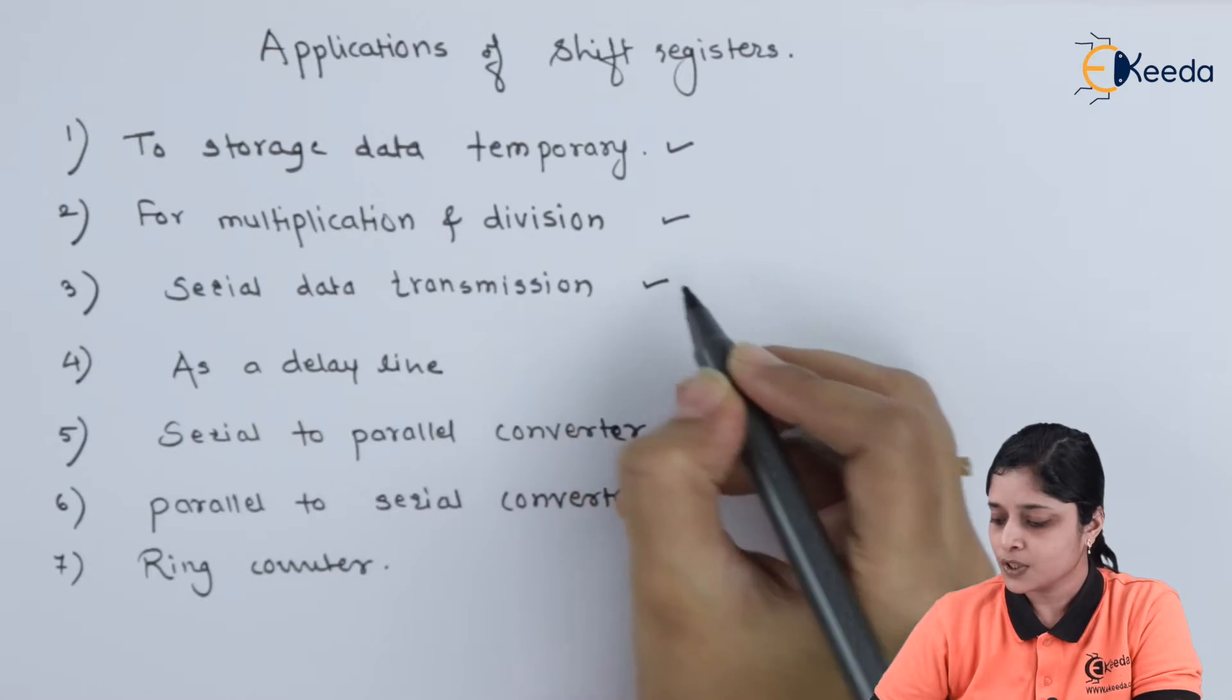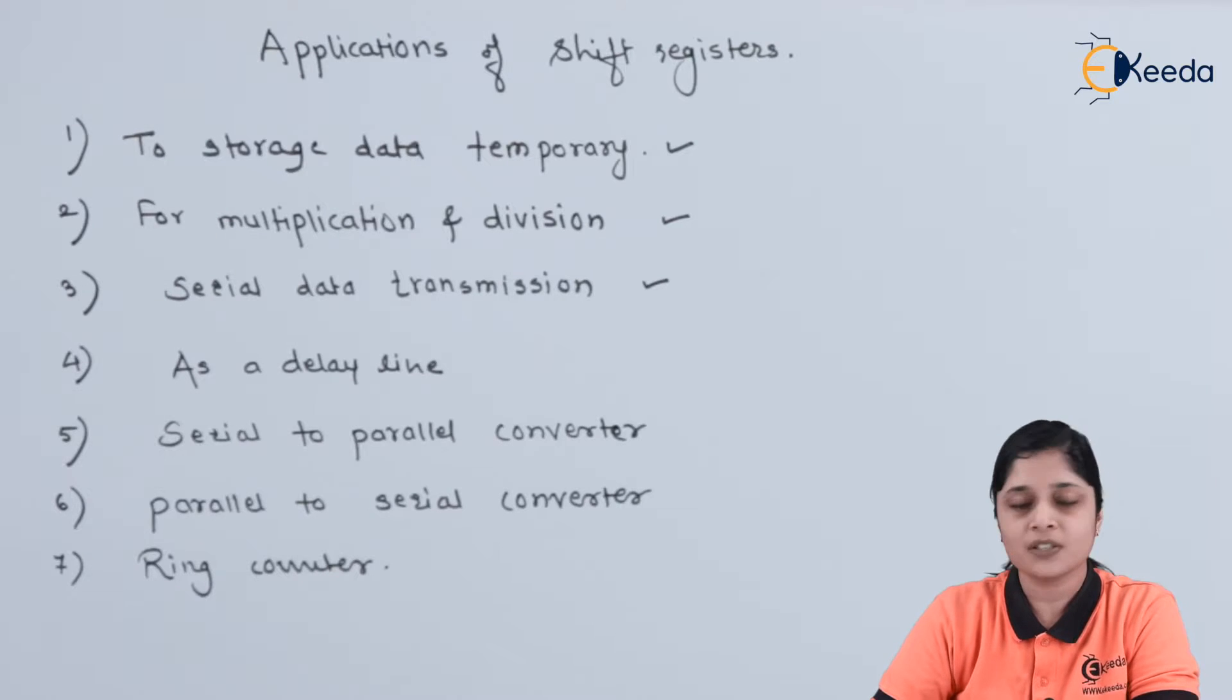Now the third application is about serial data transmission. We have already seen serial input serial output, parallel input serial output. So all these are the registers which are used for serial data transmissions. There are many applications which require the transmission of data serially instead of parallely, so in that case also the shift registers play an important role. With the use of flip-flops, flip-flops are the building blocks for the design of registers.